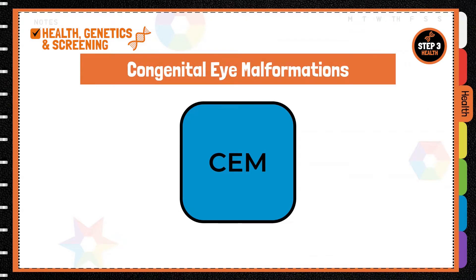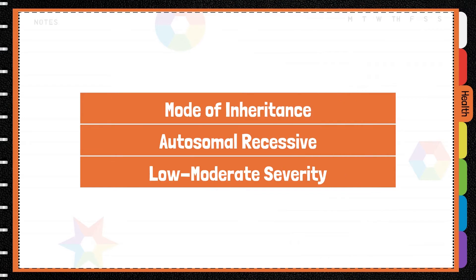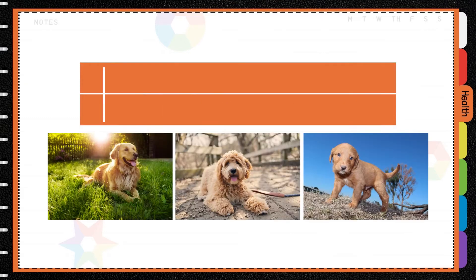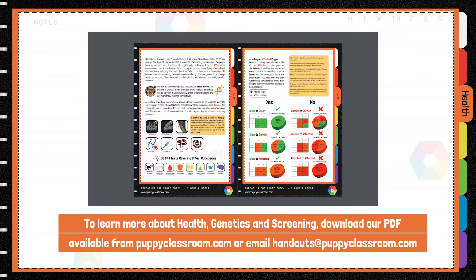Congenital eye malformations is a genetic disorder which results in malformation of the eye present from birth. The disease causes variable malformations of the eye, including uni- or bilateral retinal dysplasia with or without optic nerve hyperplasia. Mode of inheritance is autosomal recessive, and breeds affected are the Golden Retriever, the Goldendoodle, and the Groodle.